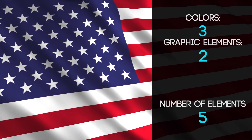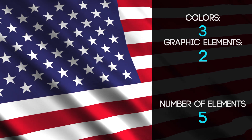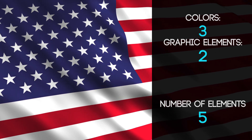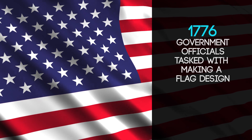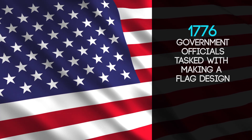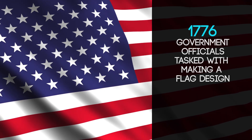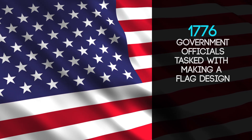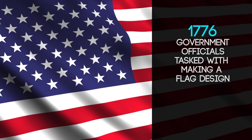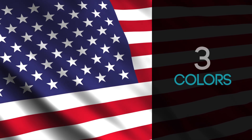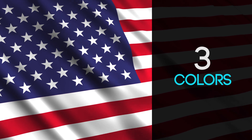According to Time Magazine, the American flag's colors are attributed to the Great Seal of the United States. In 1776, government officials called for the creation of an official seal to represent the United States. Designers were asked to create prospective seals that reflected the country's values. Eventually, a red, white, and blue design was selected.